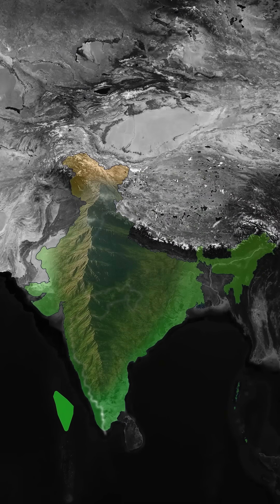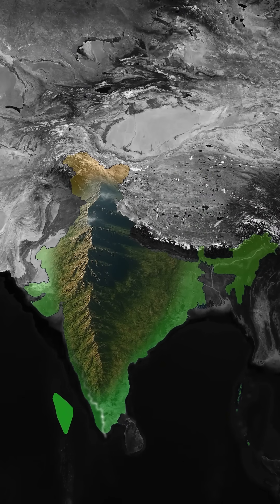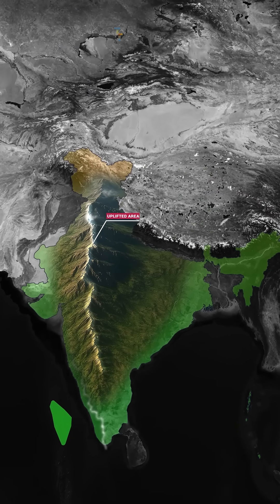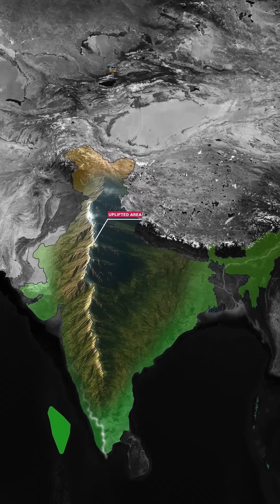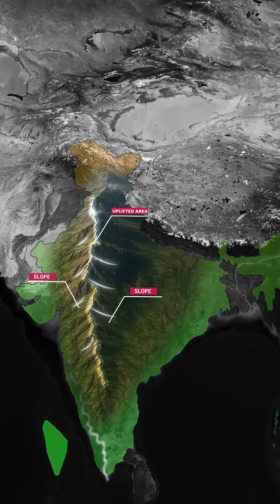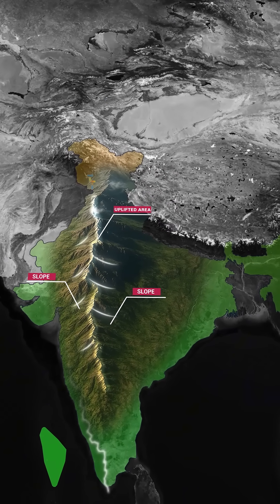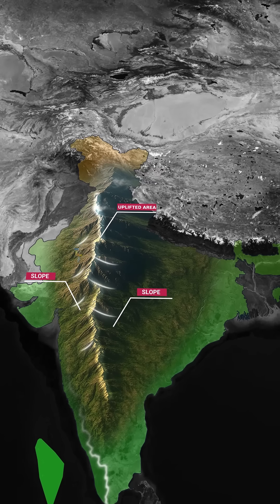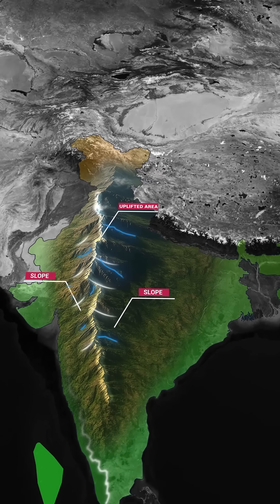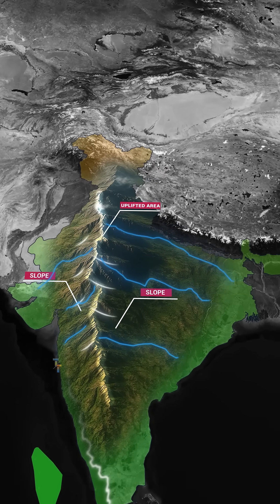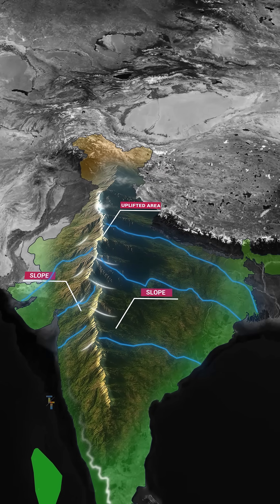The presence of mountain ranges and the elevated terrain along this line creates a slope on both the eastern and western sides. This slope dictates the direction of water flow, either eastward or westward.